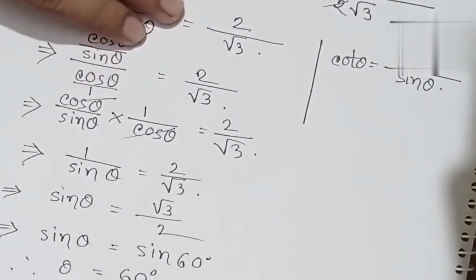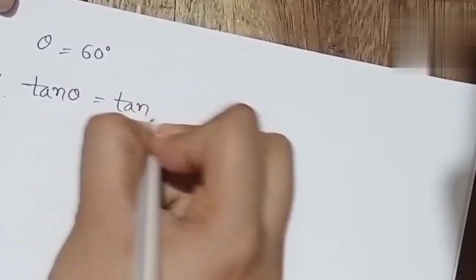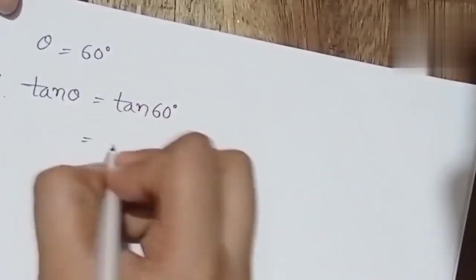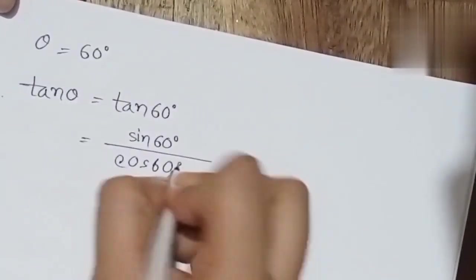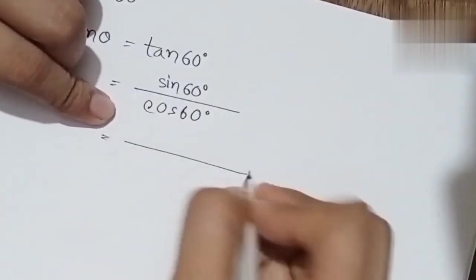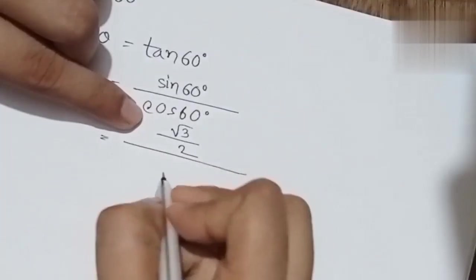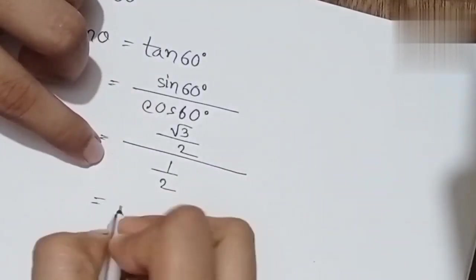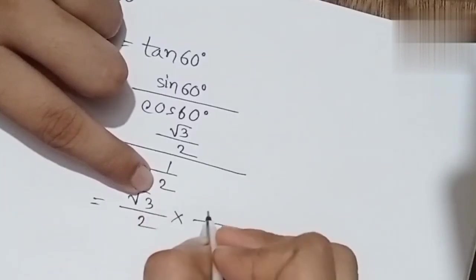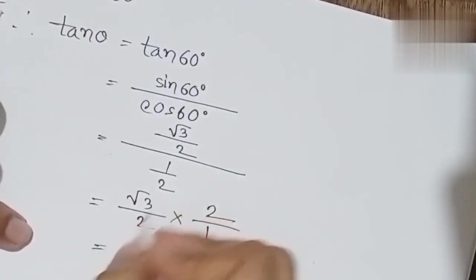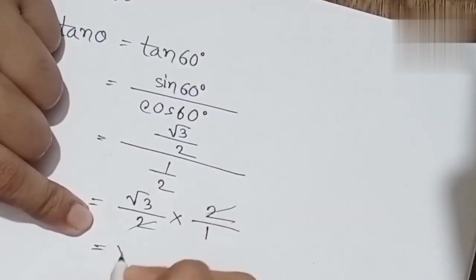The theta is equal to 60 degree. Tan theta equals to tan 60 degree. Sin 60 by cos 60. Tan theta is equal to sin theta by cos theta. Sin 60 is equal to root 3 by 2, and cos 60 is equal to half. So root 3 by 2 divided by half is equal to root 3.